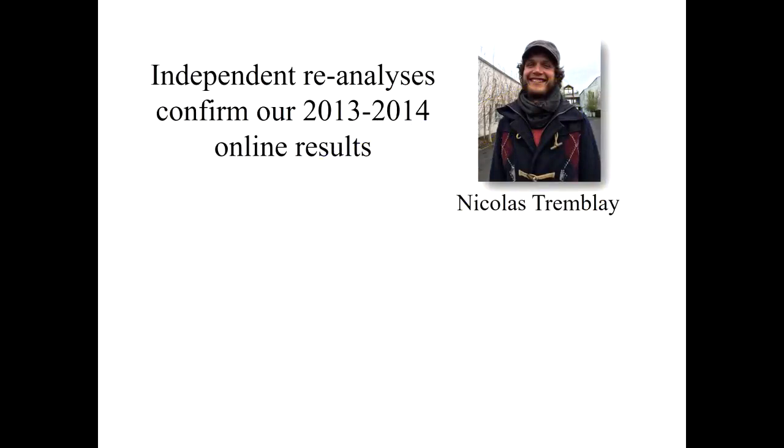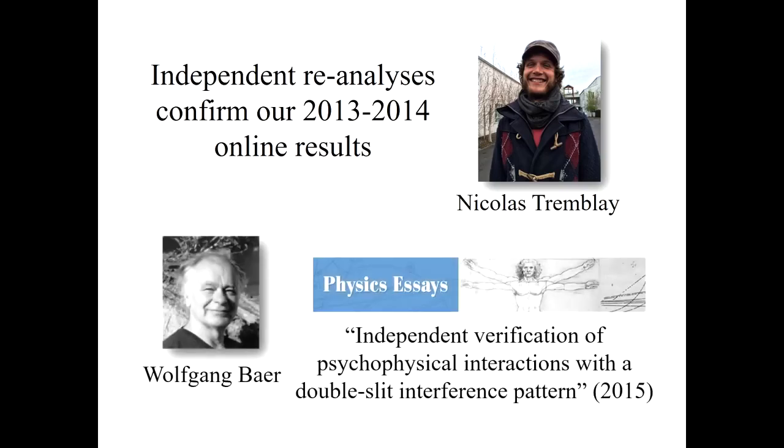So we so far have two independent reanalyses of our online data from 2013 and 2014. Nicholas Tremblay is a PhD postdoc in physics who's in France. And he came to visit us for a month, and we gave him the 80 gigabytes of data and said, see what you can get. So he was able to confirm that the results that we reported in that paper, which just came out this year, was correct. And a second analysis was done by Wolfgang Baer, who's a physicist in the United States. And he independently verified that the results were correct as well, and he did publish that result.